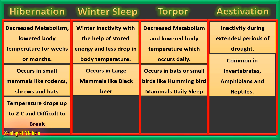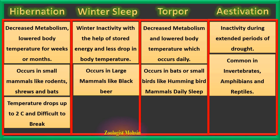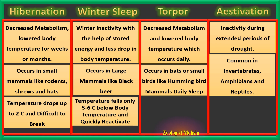In hibernation, temperature drops to as low as 2°C — that is a huge change in body temperature. Imagine if a human body temperature of 37°C fell all the way to 2°C. It is also very difficult to break once an organism is in true hibernation.